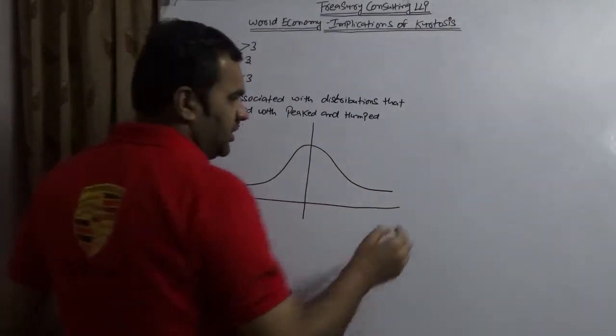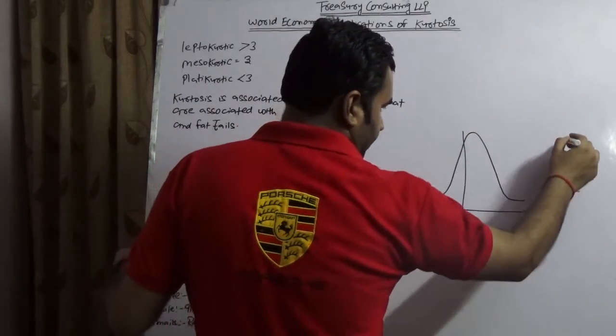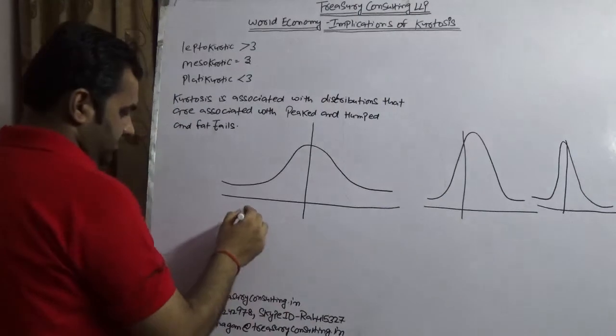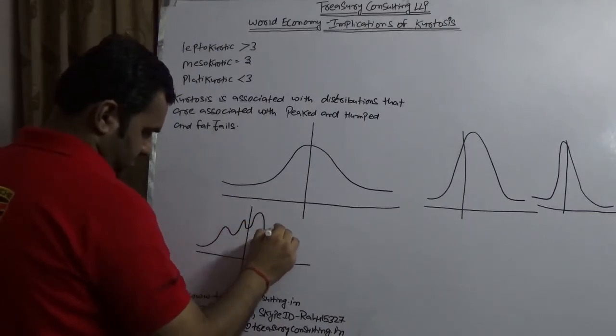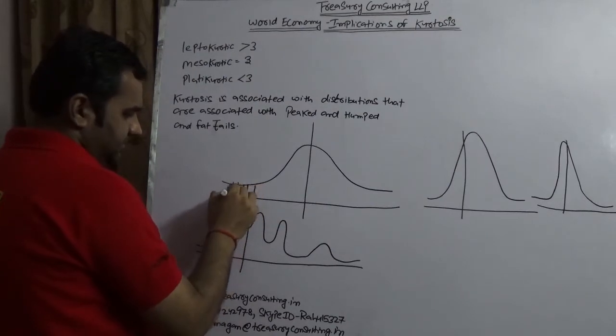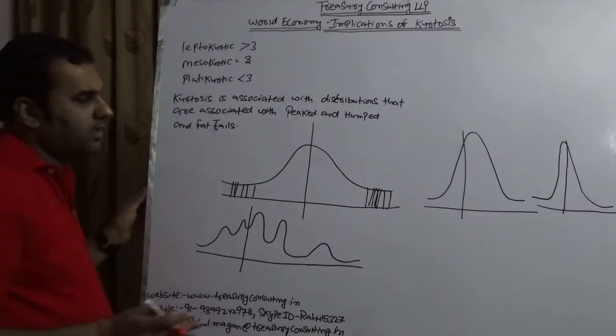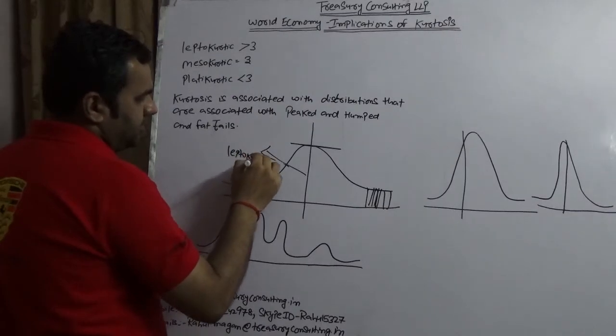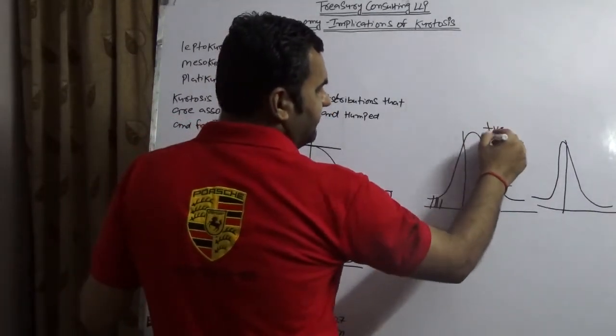Now I am writing two, three, four curves to you. Look at this fat tails. This is the most theoretical definition of our kurtosis. It is humped, yes. It has fat tails, yes. Now this is leptokurtic. Is it having fat tails? Yes. But what is this curve? This is a positive skew curve.